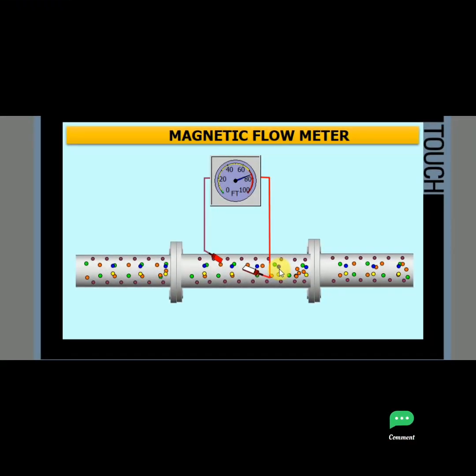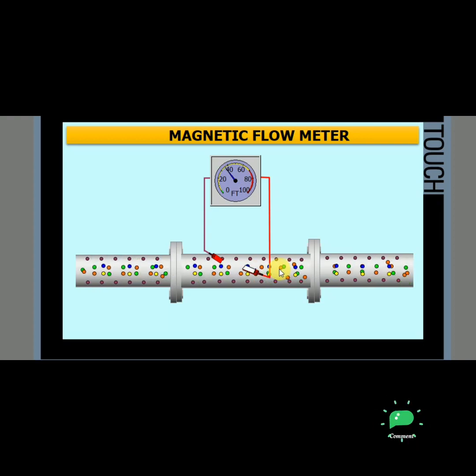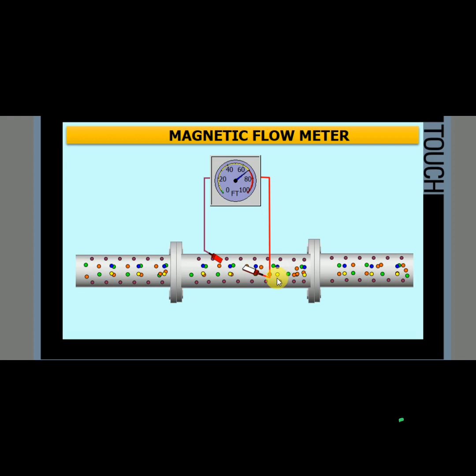The magic is in the magnet. Let's look at the physical properties of how a magnetic flow meter converts velocity into a flow signal that can be used in a control system. Previously, we mentioned that mag meters convert a velocity into a measurable electrical signal. How does this happen?